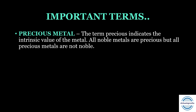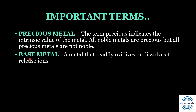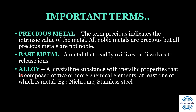The next important term is precious metal. Here the term precious indicates the intrinsic value of the metal. All noble metals are precious, but all precious metals need not be noble. The next important term is base metal — a metal opposite to the noble metal, one that will readily oxidize or dissolve to release ions. An alloy is a crystalline substance with metallic properties composed of two or more chemical elements, at least one of which must be a metal — for example, nichrome (nickel-chromium alloy) and stainless steel.